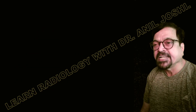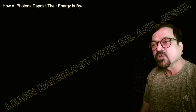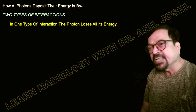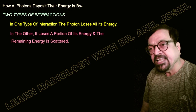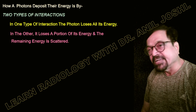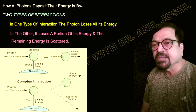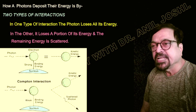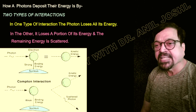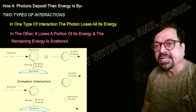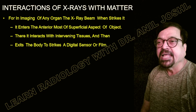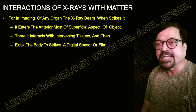This is the fate of the x-ray when it enters the body and leaves it. A photon deposits its energy through two types of interactions: in one type the photon loses all its energy, and in the other it loses a portion of its energy and the remaining energy is scattered. A photon coming in can leave as kinetic energy, or it can produce a kinetic energy component and a scattered photon. These are the things that can happen when an x-ray hits an object — typically a body part being imaged.